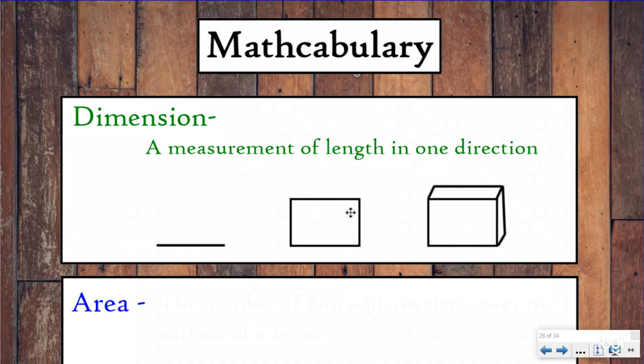You call it 1D. A rectangle can be measured with length and width. So we call that two-dimensional because it can be measured in two different directions. And then a cube is three-dimensional because you can do length, width, some people call it depth, and then height. It can be measured in three directions. All of our area unit is focused on two-dimensional shapes, in particular the rectangle and the square.